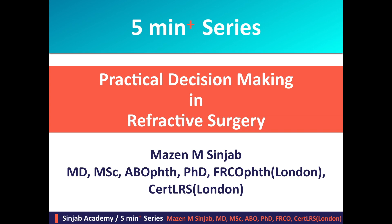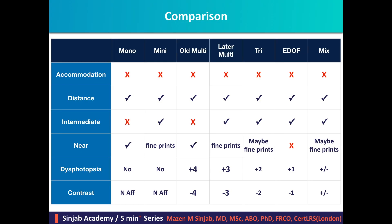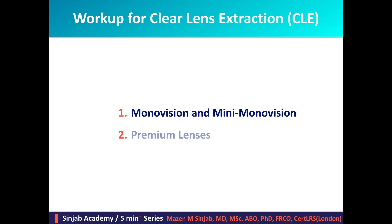Practical Decision Making in Refractive Surgery — Episode 11, The 5-Step Practical Approach, Part 8. In the previous video, I talked about different types of intraocular lenses and the difference between them in terms of range of vision, induced dysphotopsia, and affection of contrast sensitivity. In this video, I am going to talk about the work-up for clear lens extraction when mono or mini-monovision is planned.